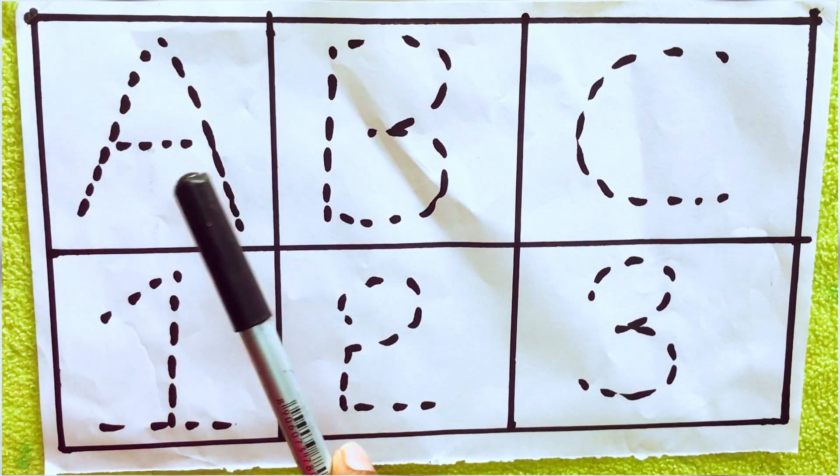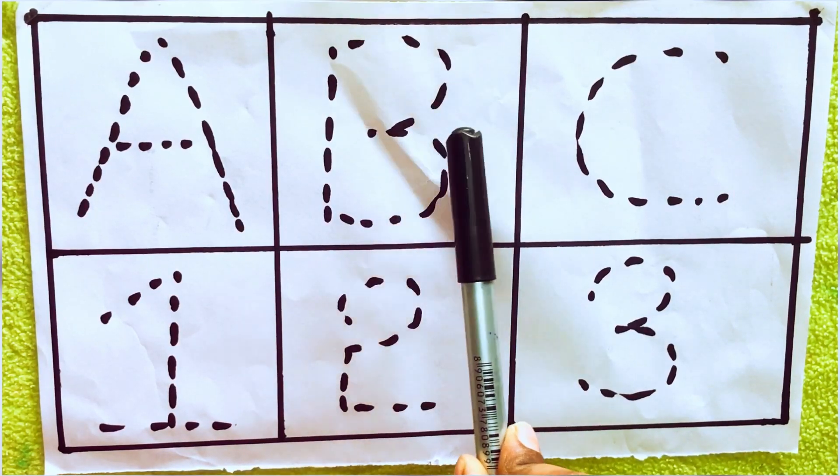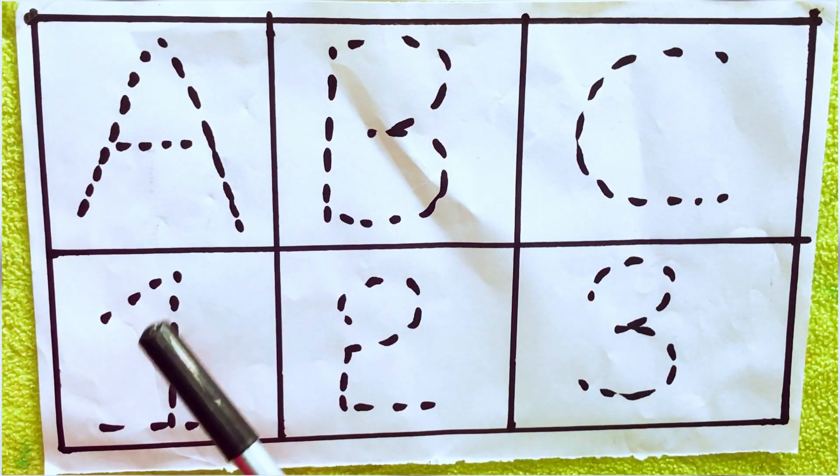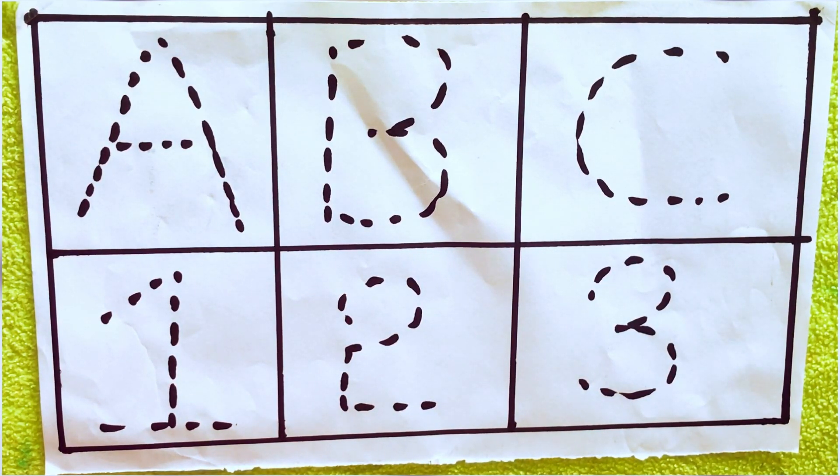Let's draw alphabets and 1, 2, 3. A, A for apple, A-P-P-L-E. B for ball. C, C for cat. One, O-N-E, one. Two, T-W-O, two. Three, T-H-R-E-E, three.